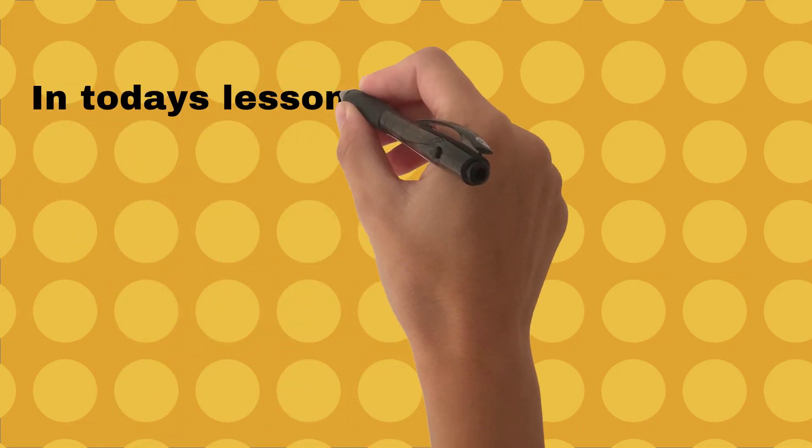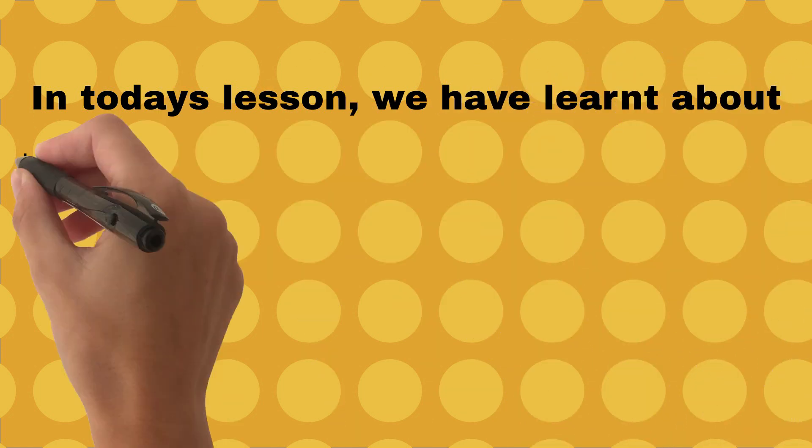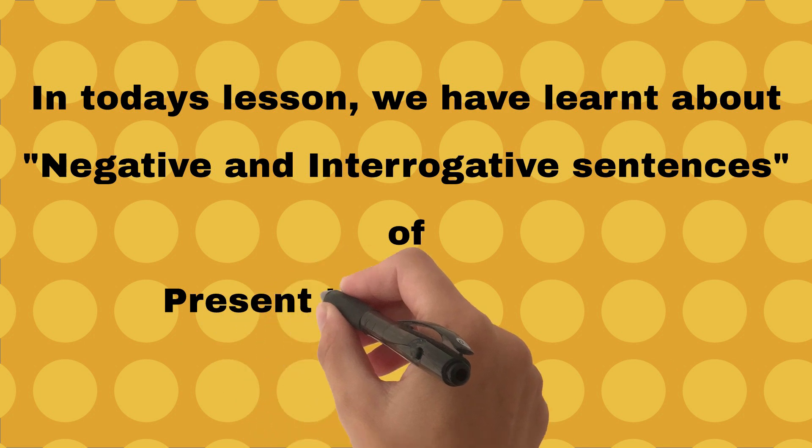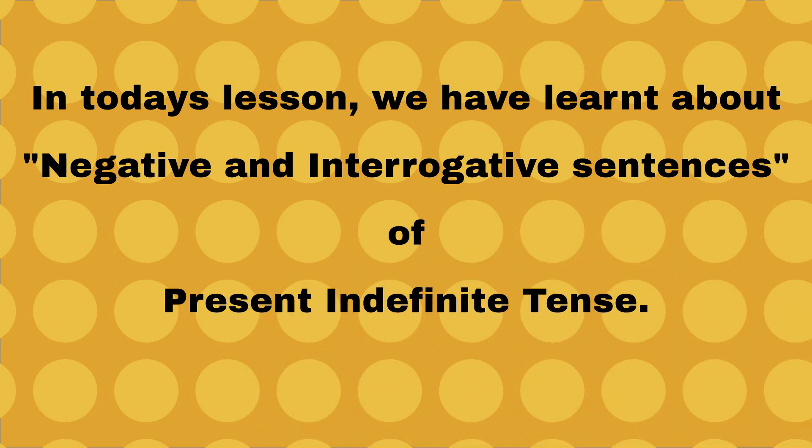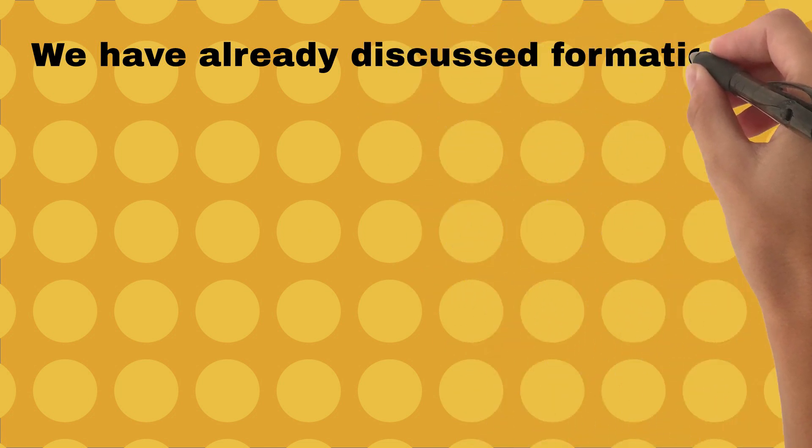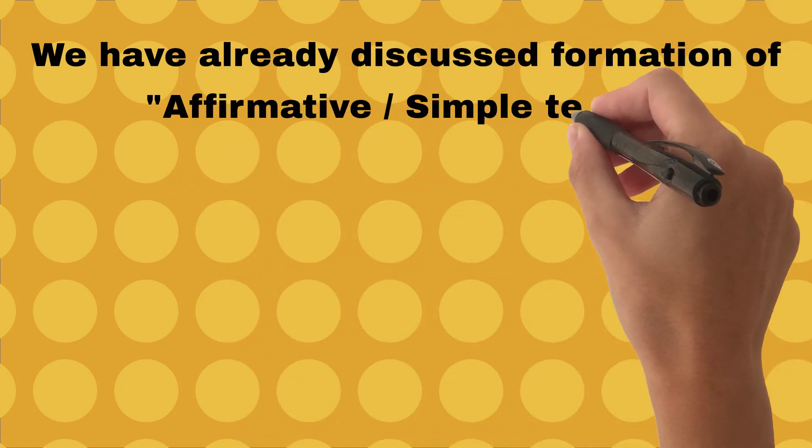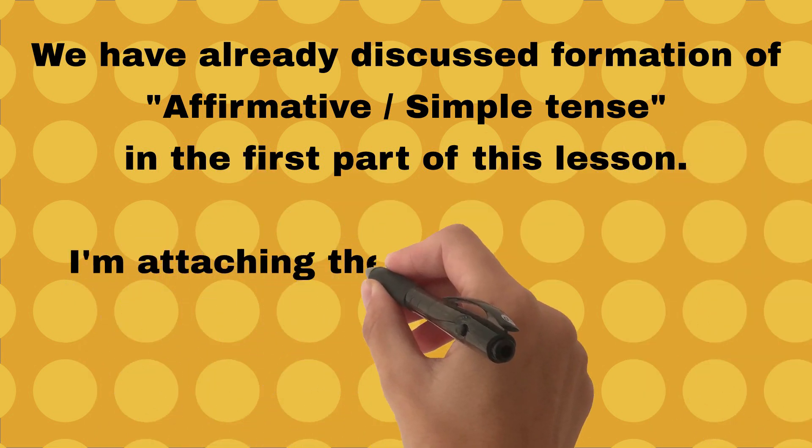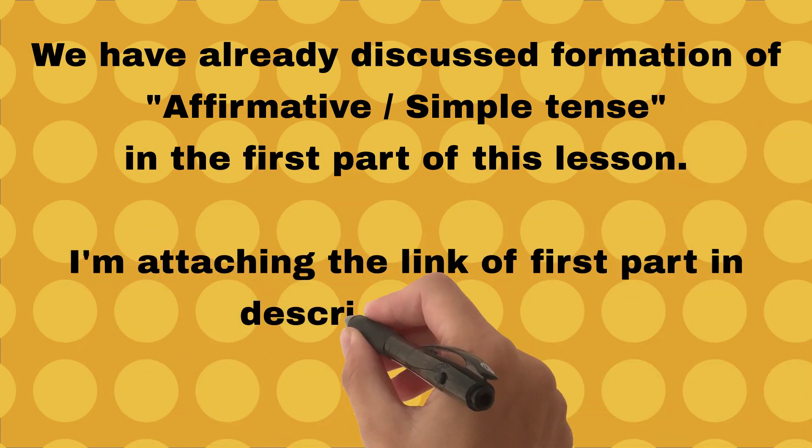In today's lesson, we have learned about how to make negative and interrogative sentences of present indefinite tense. We have already discussed formation of affirmative or simple tense in the first part of this lesson. I'm attaching the link of first part in description below.